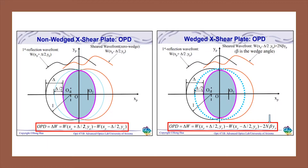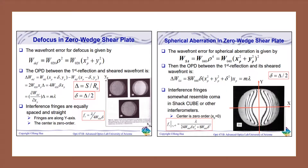For the lateral shear interferometer, the tested wavefront interferes with a shifted version of itself, and the measurement is a difference in the wavefront, not the wavefront directly. Aberrations present in a lens will alter the fringe spacing function, and thus the interferogram as a whole.